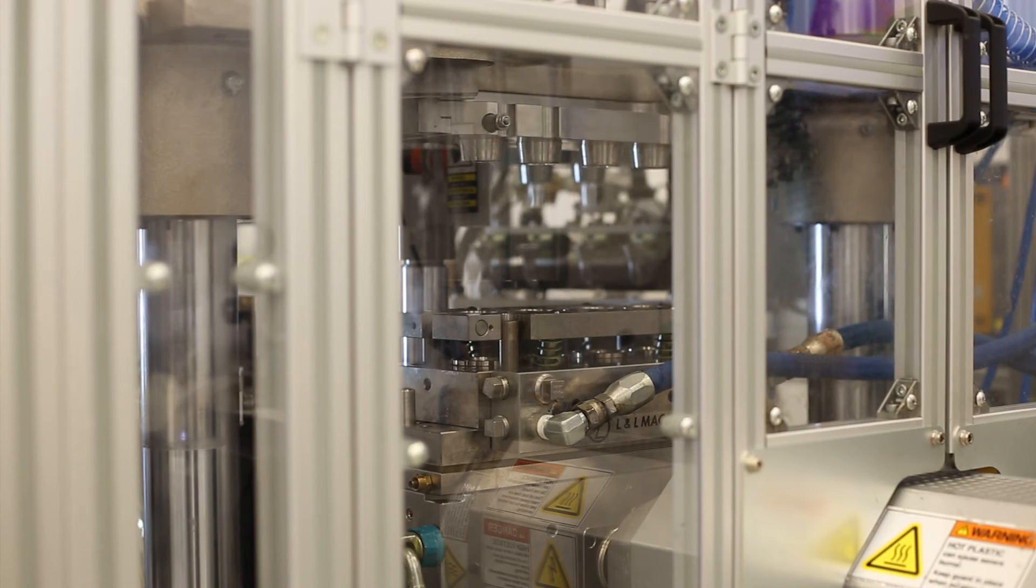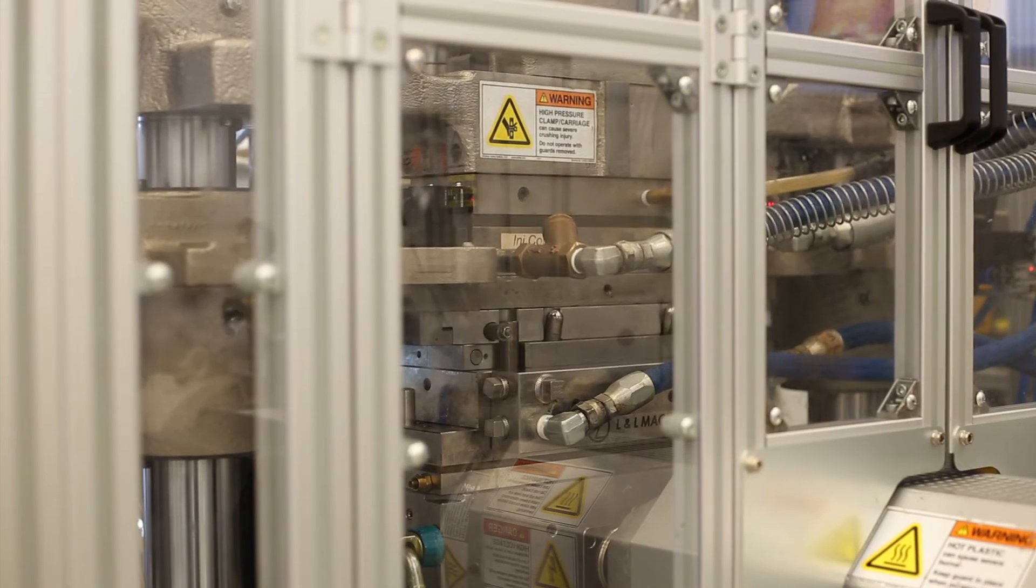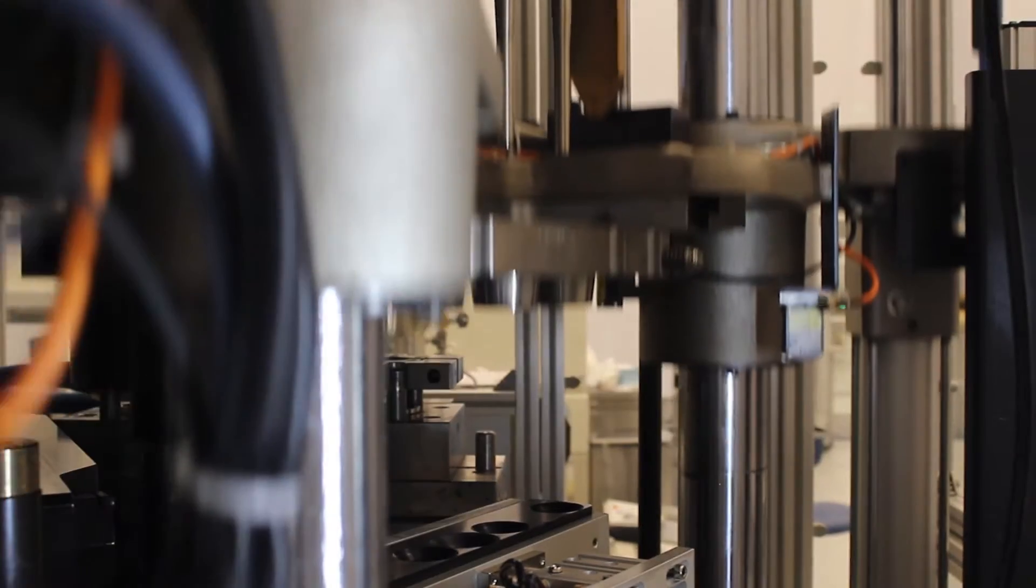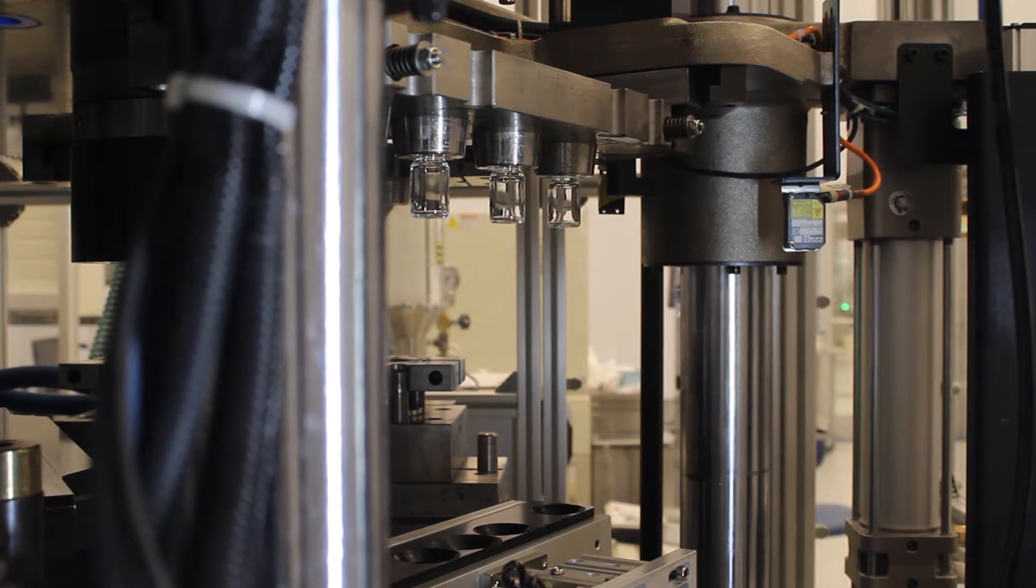Molten polymer is first extruded into a mold that forms a preform. The preform is then heated up, stretched, and blown into another mold to form the final vial.